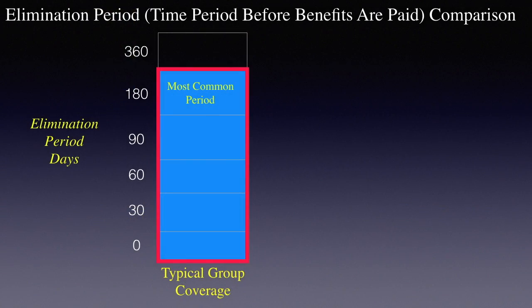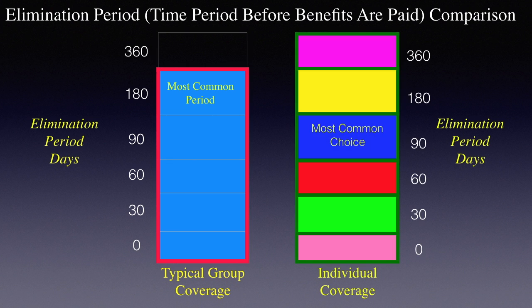First of all we'll look at the elimination period. This is normally in days, and it starts on the first day you're disabled — it's the number of days that must elapse before benefits are paid. On a typical group policy, it's 180 days — that's six months before you get a check. On an individual policy, you get to choose according to your needs and wishes, but they all must occur within the accumulation period.